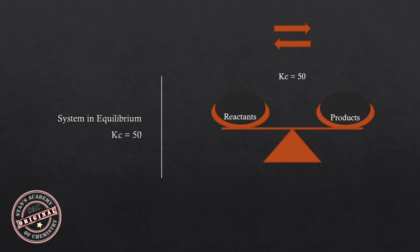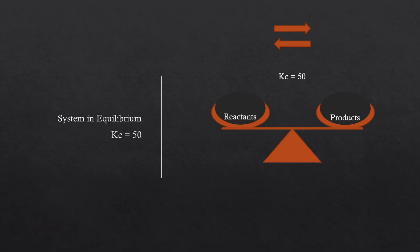We can use the concentration quotient to predict the direction of equilibrium shift when we are given values to calculate Qc and Kc. This is a consequence of Le Chatelier's Principle.